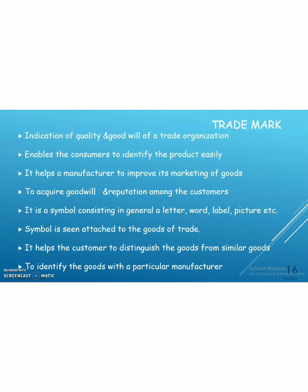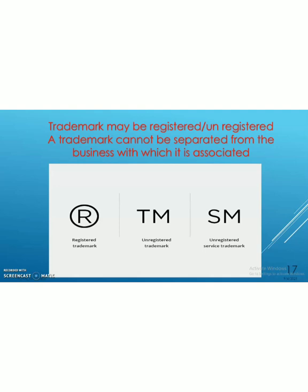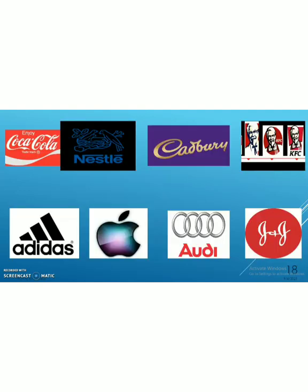Next is trademark. This is the indication of quality and goodwill of a trade organization. It helps consumers to identify the product easily and helps the manufacturer to improve its marketing of goods and to acquire goodwill and reputation among customers. The trademark is either in the form of a symbol — a letter, word, label, picture, etc. — attached to the goods of trade. By this trademark, customers can distinguish similar goods and identify goods with a particular manufacturer. The trademark may be registered or unregistered.